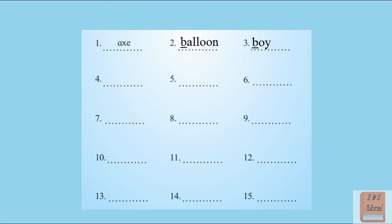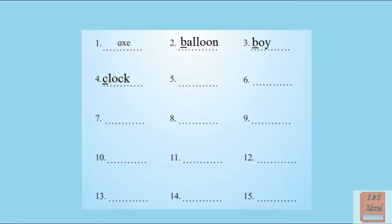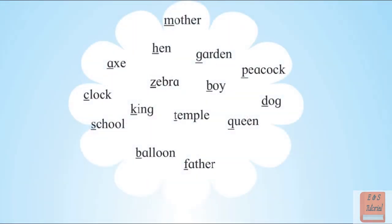After B, what is the next alphabet? C. So with C, we have clock. Next, after C, we have D. The word given which starts with D is dog.